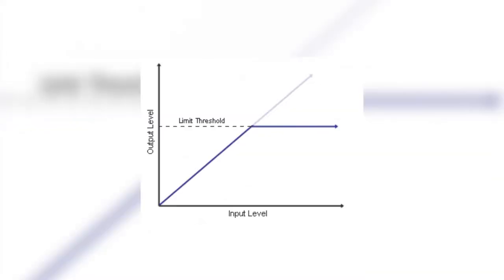A limiter is a downward compressor with a ratio of 10 to 1 or higher, obviously meant to have a stronger effect than a compressor. It limits the level to a certain threshold — thus the name, limiter. A compressor will smoothly reduce the gain, while a limiter will prevent any gain from passing the threshold at all.